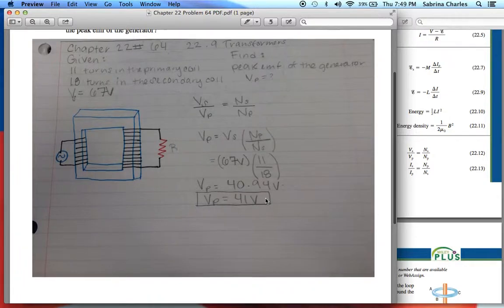We just plug everything in: 67 volts for VS, 11 turns for the primary coil, and 18 turns for the secondary coil. After doing the math we get 40.94 volts, which we then round to 41 volts.